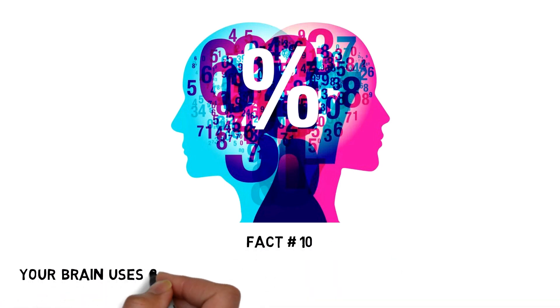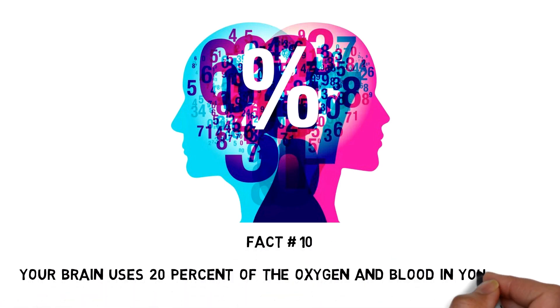Fact number 10: Your brain uses 20% of the oxygen and blood in your body.